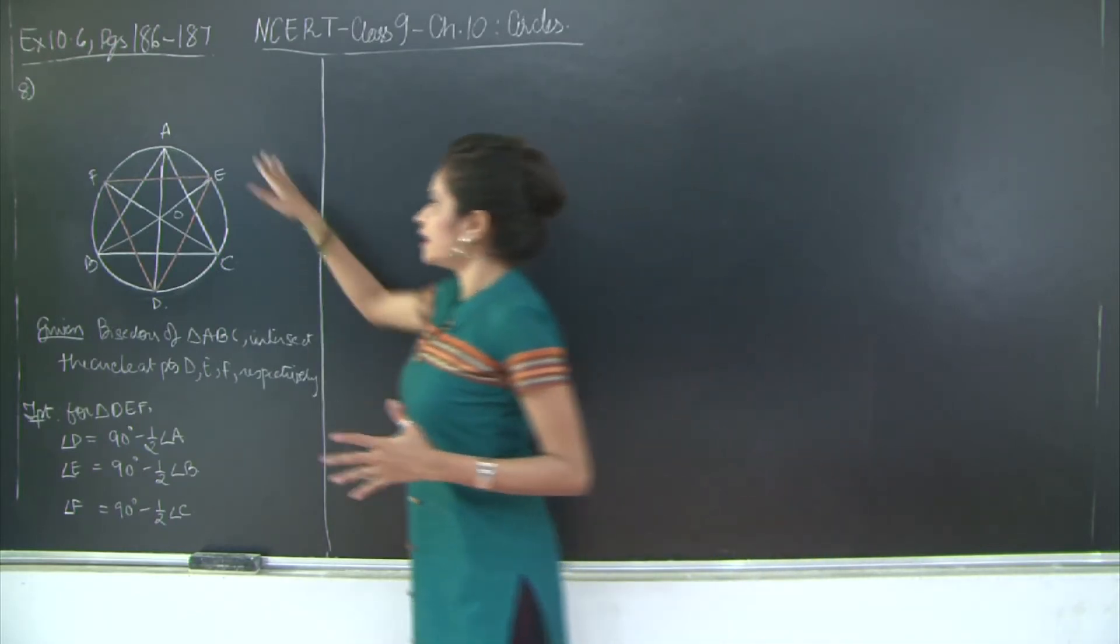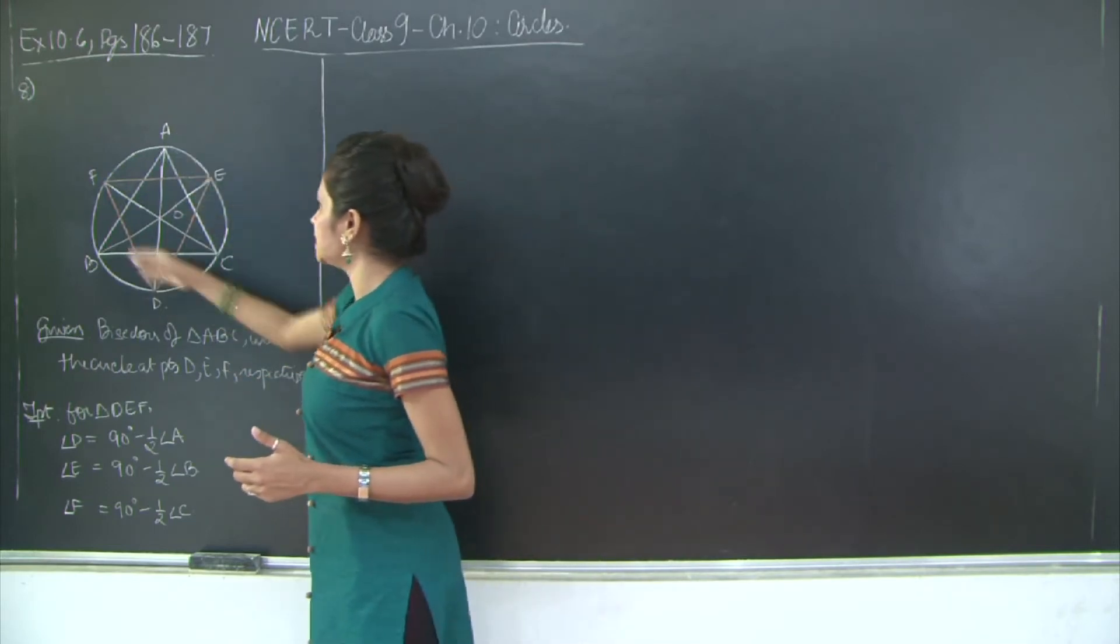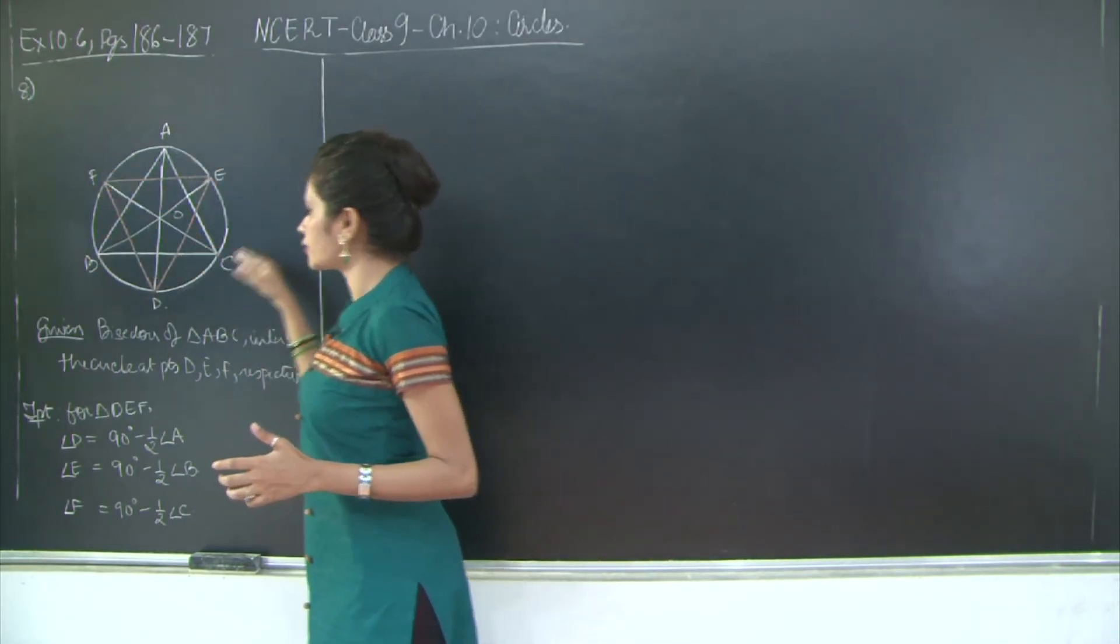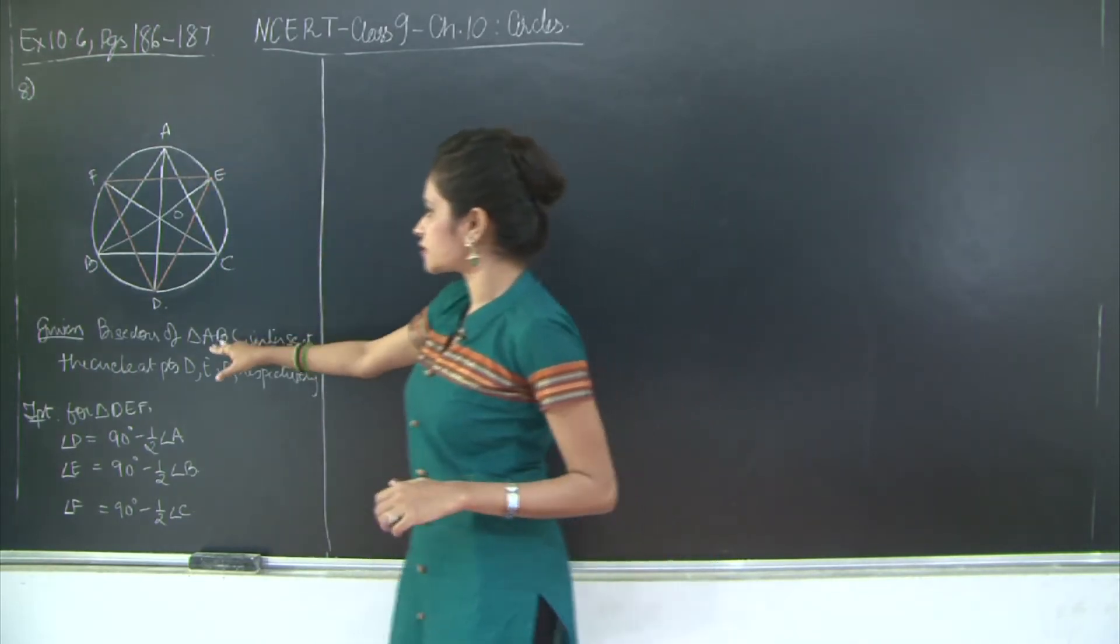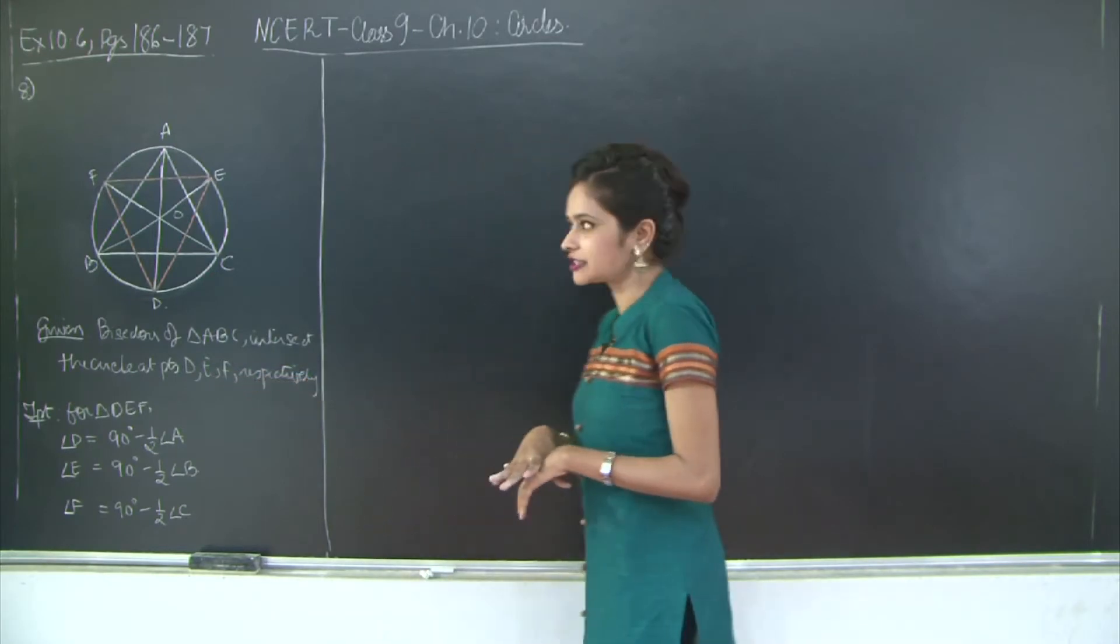Here you have a triangle ABC such that the bisectors are AD, BE and CF for the angles of a triangle. So the bisectors of triangle ABC intersect the circle at points D, E, F respectively.